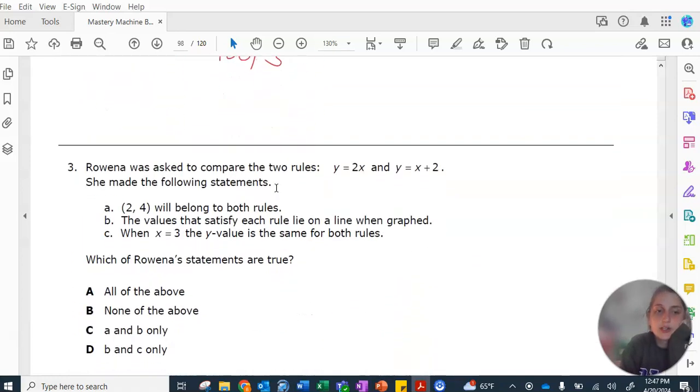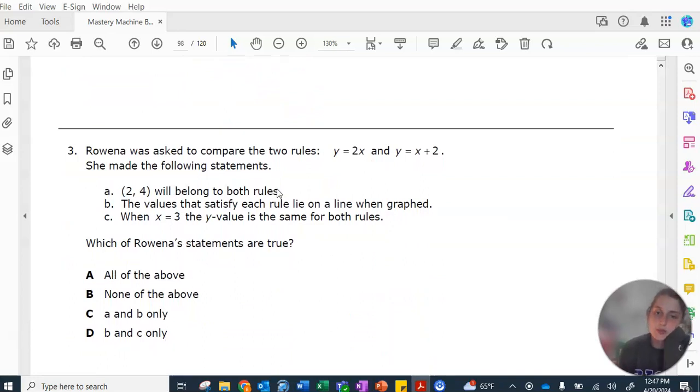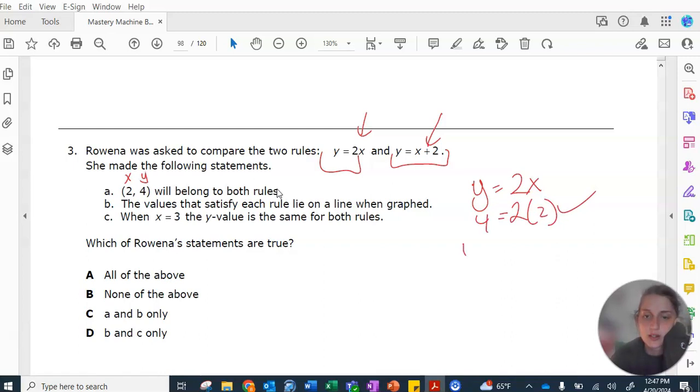Number 3, Rowena is asked to compare the two rules, y equals 2x, and y equals x plus 2. Before I even read, I can see this one's multiplicative, and this one's additive. A says the value 2, 4 will belong to both rules. That means if x is 2, y will equal 4. You can check that by substitution. Y equals 2x, if x is 2, y is 4. Y equals x plus 2, if x is 2, y will also be 4.